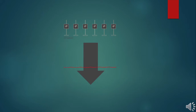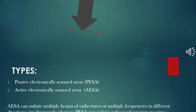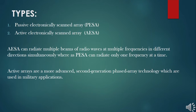The direction of propagation of radio waves can be changed by feeding a different set of phase delayed radio waves. There are two types: PESA, passive electronically scanned array, and AESA, active electronically scanned array. AESA can radiate multiple beams of radio waves at multiple frequencies in different directions simultaneously, whereas PESA can radiate only one frequency at a time.